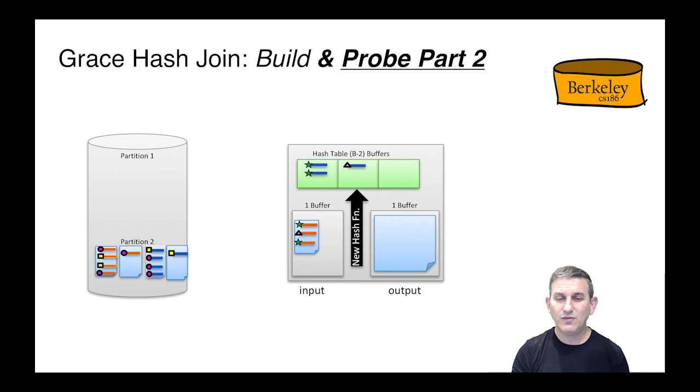Then we take the probing relation, which is the orange relation here for partition one, and read in a page of that. For each tuple of that, we're going to look for matches in the hash table. When we see a match, we'll concatenate the tuples and add them to the output.